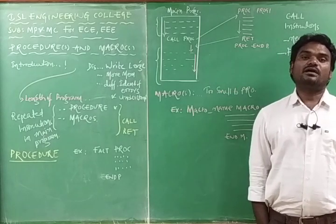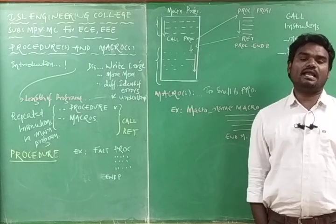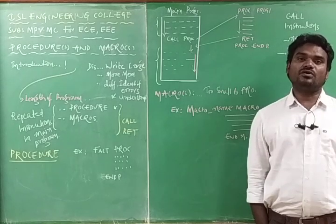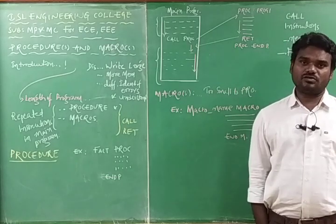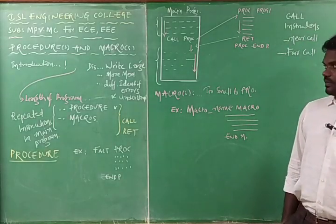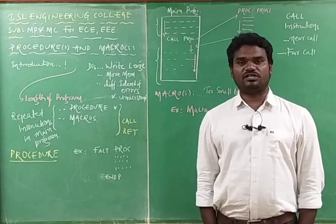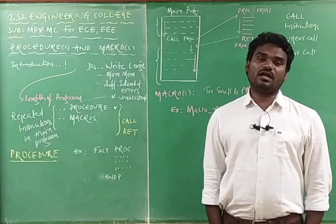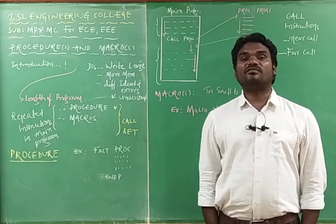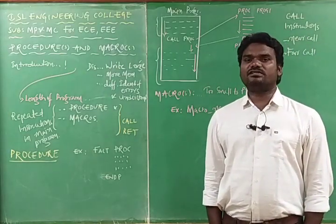The assembler is a program which converts assembly language into machine language. The assembly language program is written by the programmer and it has to be converted into machine language by the assembler. These short forms of English words that give directions during this conversion are named assembler directives. In the last class we discussed nine assembler directives.